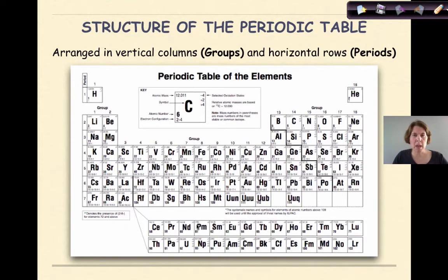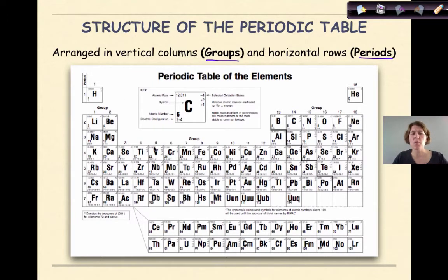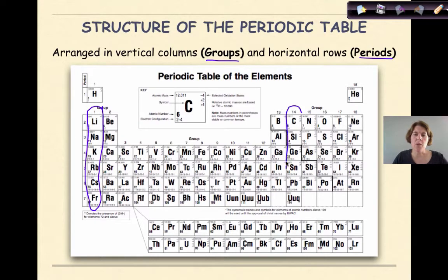Now let's look at the structure of the periodic table. There are two major things you need to know at the very beginning. The periodic table is arranged in vertical columns called groups and horizontal rows called periods. If we look at group one, we're looking at these elements right here. Or group fourteen — that means we're looking at the elements in this column right here.